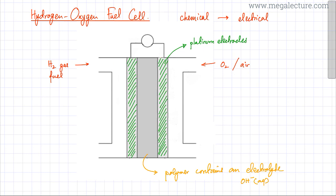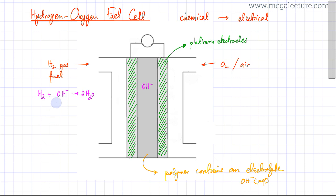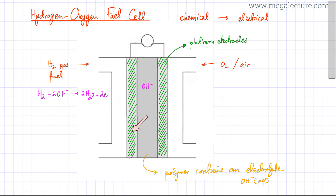The first reaction happens on the left-hand side where hydrogen gas comes in and gets into contact with the OH⁻ ions present in the electrolyte. Hydrogen reacts with those OH⁻ ions to produce two water molecules, two OH⁻ ions, and as a result two electrons are produced at the platinum electrode. Because platinum is acting as a catalyst, this electrode gets negatively charged as the reaction proceeds.